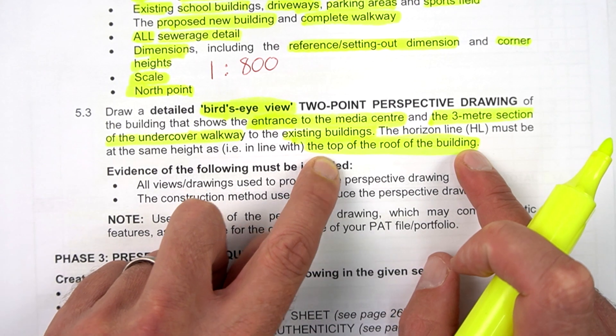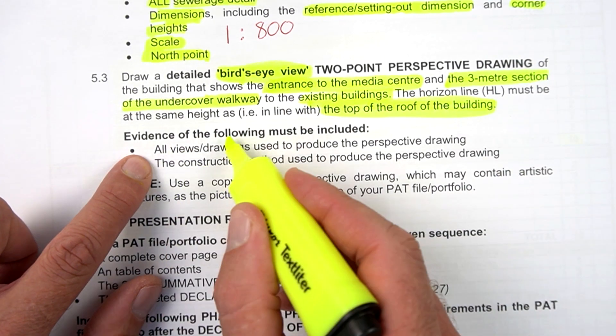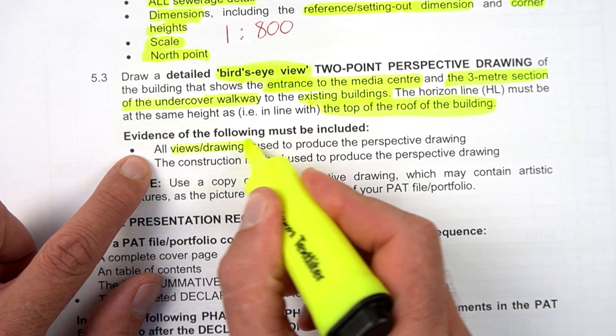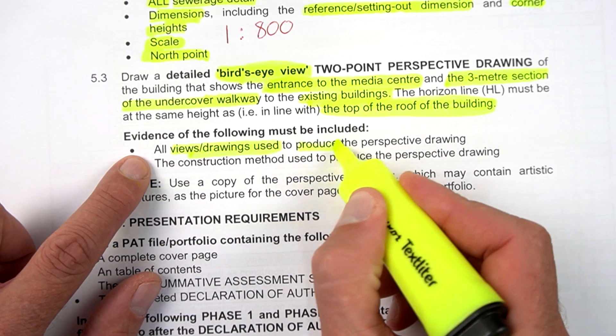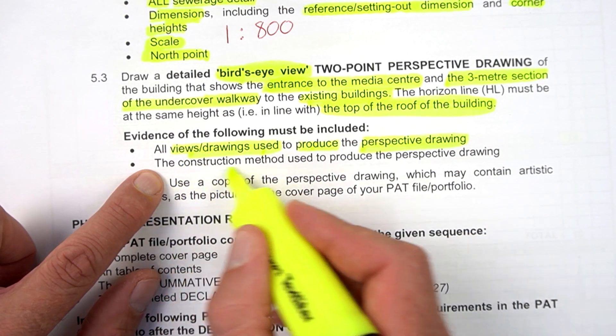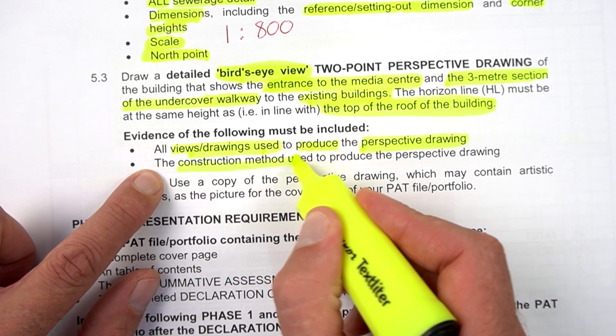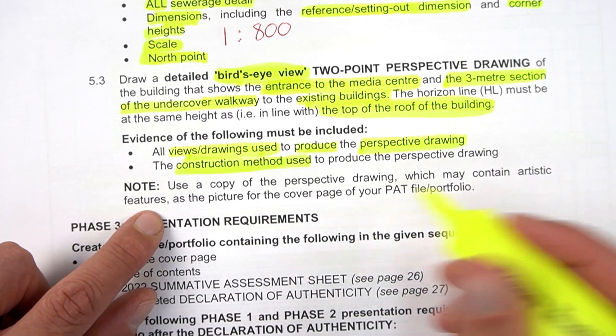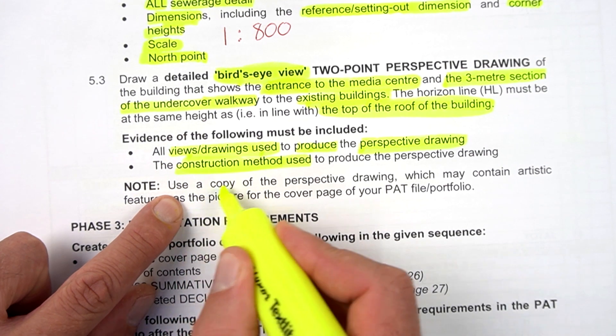Then evidence of the following must be part of the submission: all views or drawings used to produce this perspective drawing, all views and drawings used, the construction method used. They want to see how did you construct this to produce this perspective.